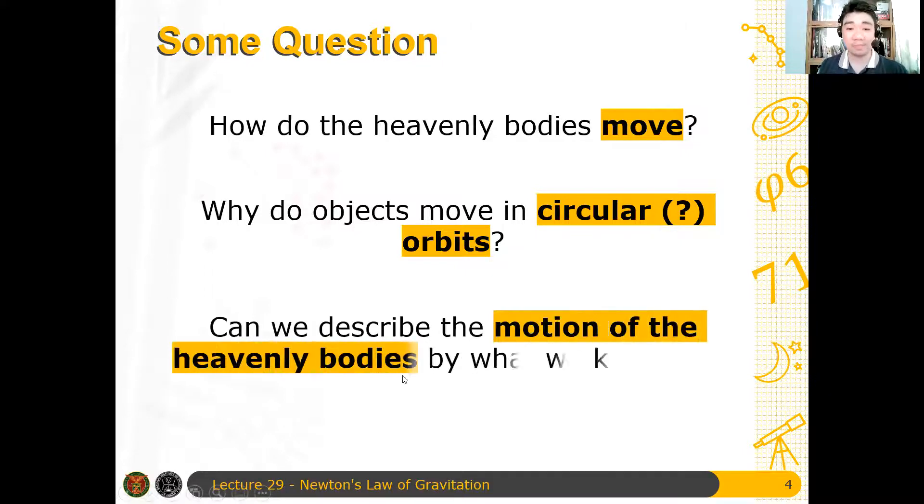And then finally, can we describe the motion of the heavenly bodies by what we know here on earth? So if you ask Aristotle, for example, 2,000 years ago, he will say maybe not. Because at the end of the day, we only know the motion in the terrestrial domain is different from the motion in the celestial domain. So the motion here on earth, which is natural, violent, or alteration, is very different from the perfect circular motion of bodies that are encircling the earth.